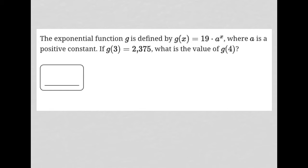This question says the exponential function g is defined by g(x) = 19·a^x, where a is a positive constant. If g(3) = 2,375, what is the value of g(4)?